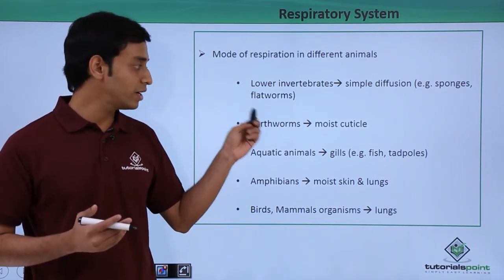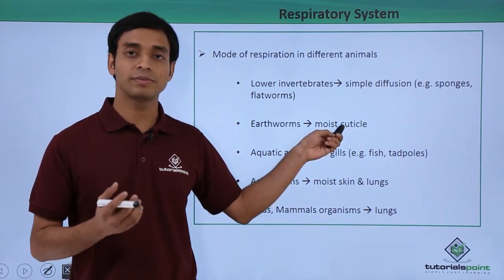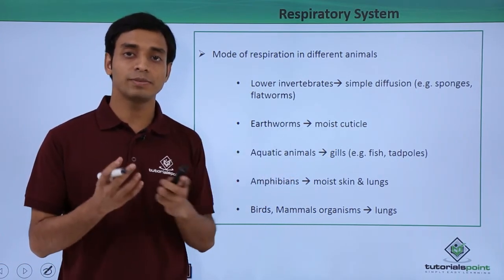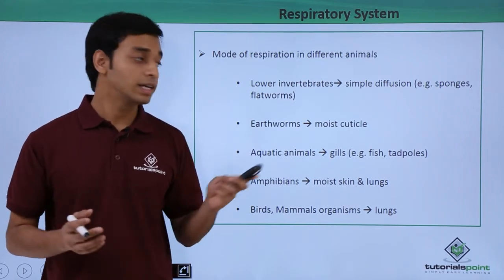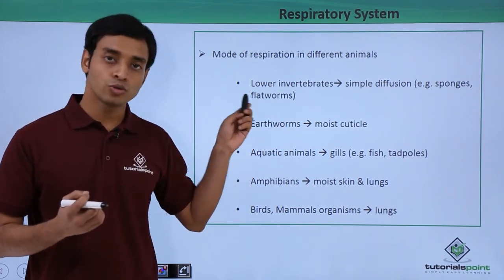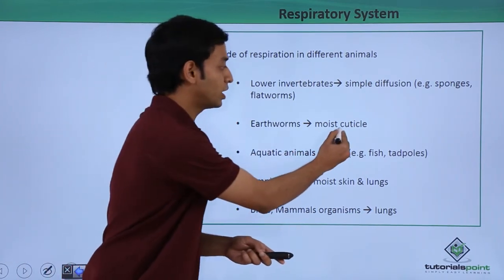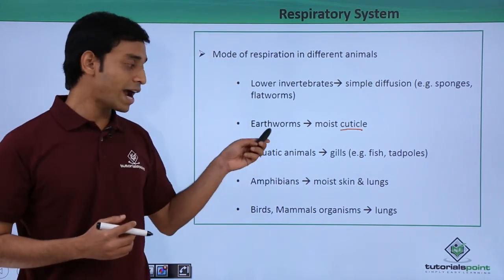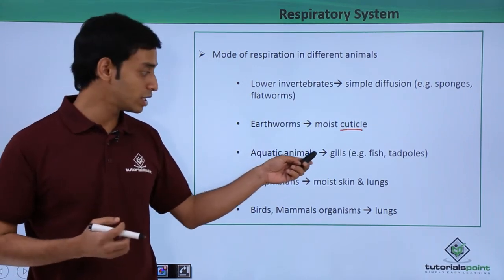In the case of earthworms, they respire through the skin — that is, the moist cuticle. This is basically dead skin present over the layers of the earthworm, and it is moist. With the help of this moist cuticle, earthworms respire. In the case of aquatic animals, they have developed an organ known as gills.